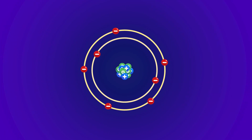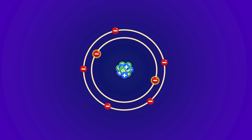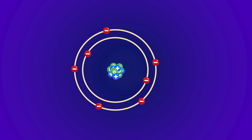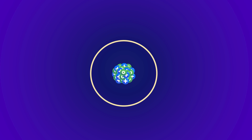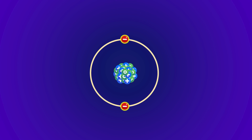Each electron shell has a specific energy level, and each electron shell can hold a certain number of electrons. All shells are filled in order of the energy level. The first shell, the closest to the nucleus, has the lowest energy level, so it's always filled first. The first shell can hold at most two electrons.